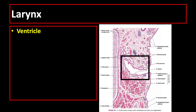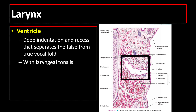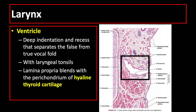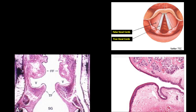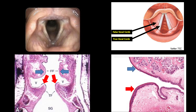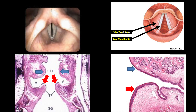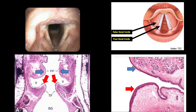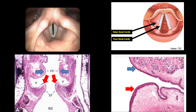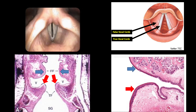The ventricle is a deep indentation and recess that separates the false from the true vocal fold. The lamina propria blends with the perichondrium of the hyaline thyroid cartilage. Every time you speak, the true vocal folds touch each other, which is why they are lined by stratified squamous epithelium — to withstand the constant friction.